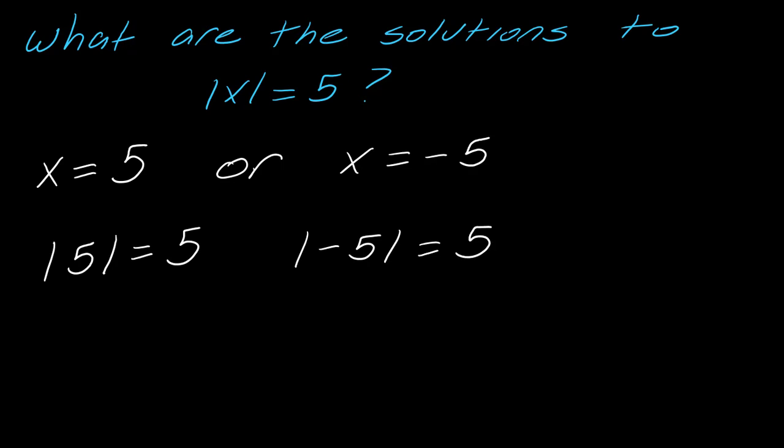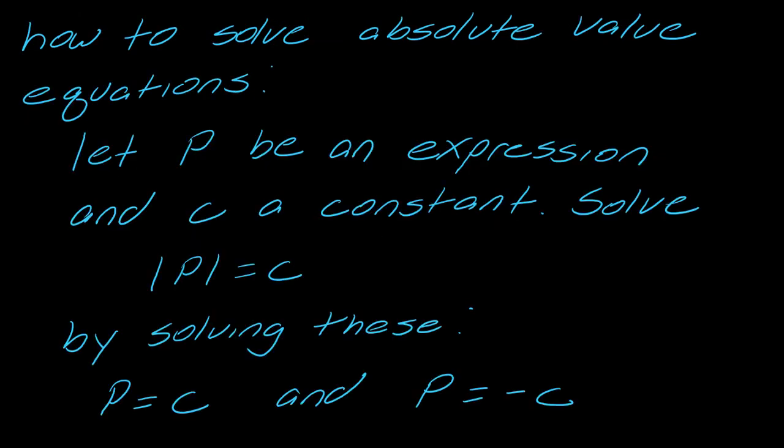So this actually highlights the way that we solve these in general. Notice that to really get to the solution here, we had to consider two possibilities, right, the positive and the negative one, because you know that the negative one will end up becoming positive from the absolute value. So you might want to write this down. I think this is very helpful to actually write this down so that you can remember it.